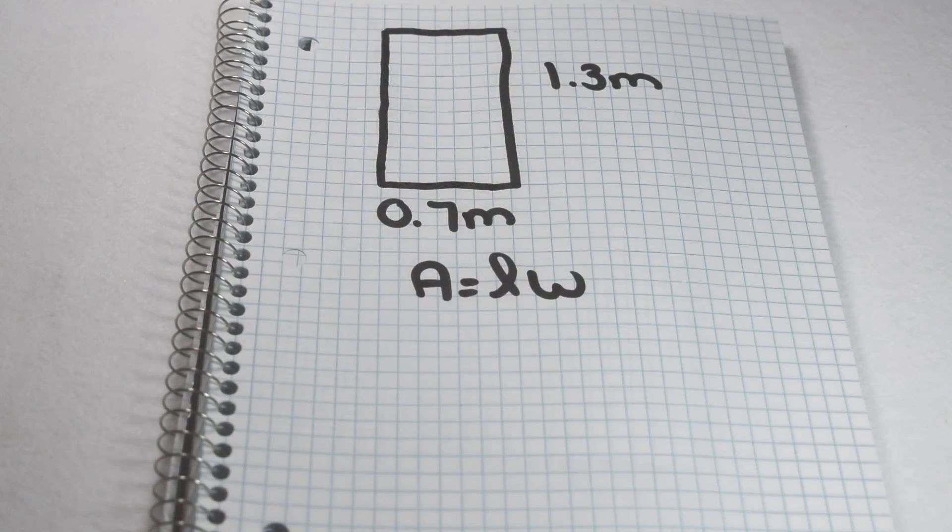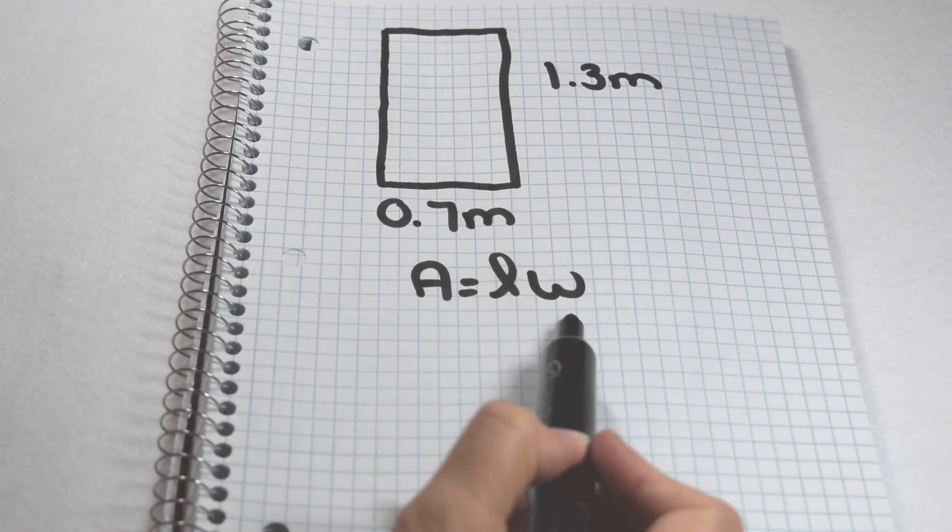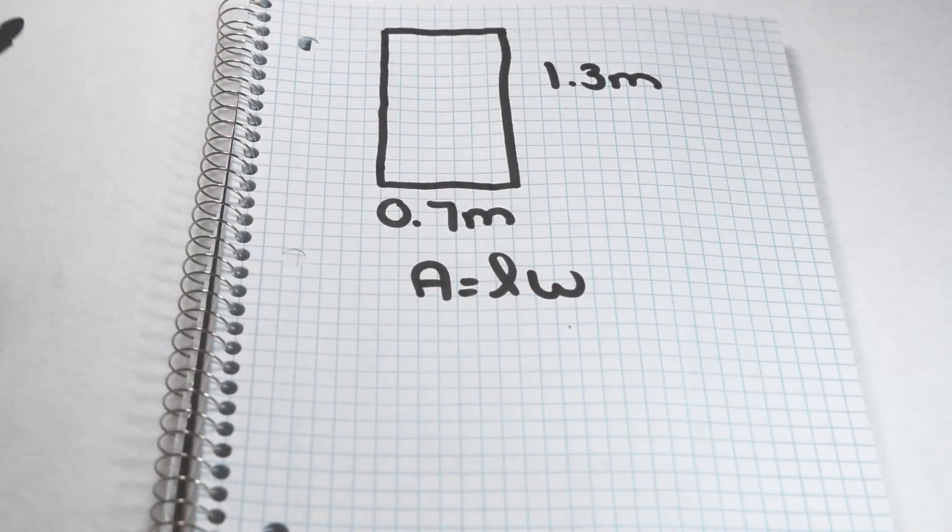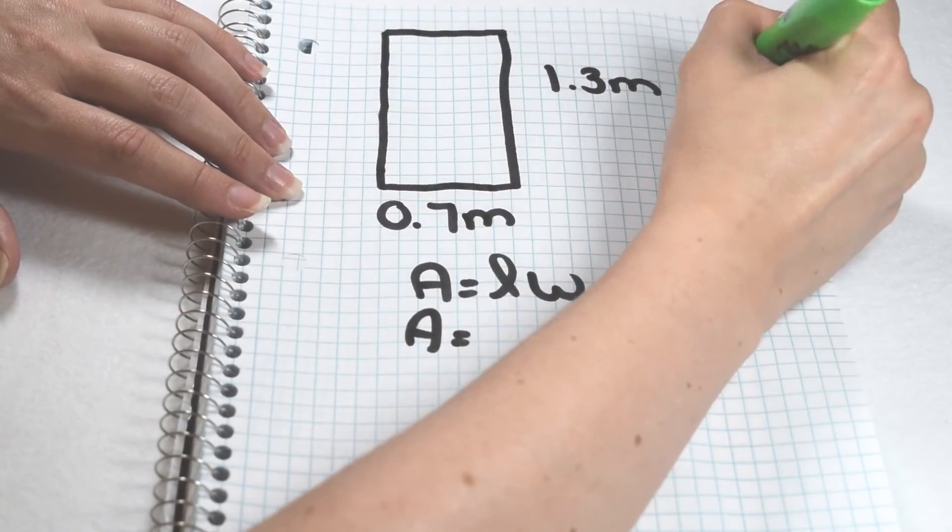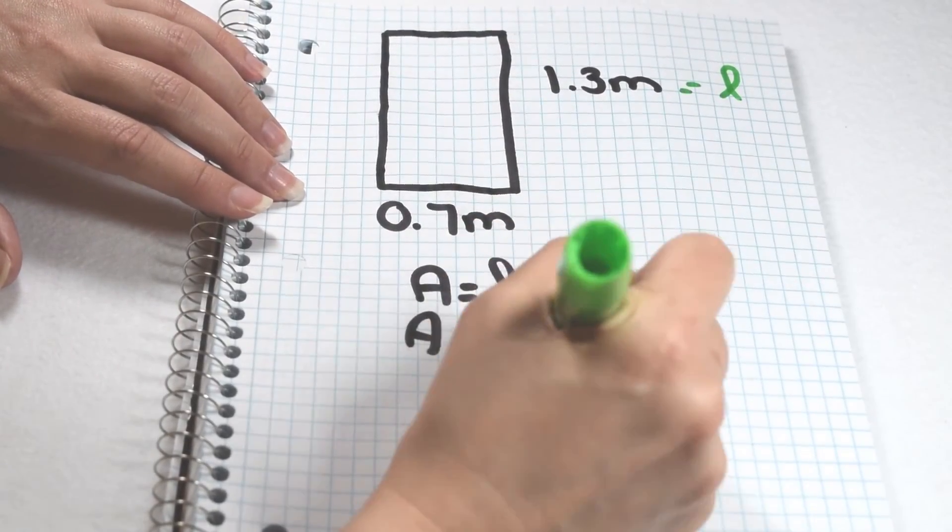When we're finding the area of a rectangle, we know we have to multiply length times width. So I'm going to treat 1 and 3 tenths meters as our length and multiply it by 7 tenths as our width. To multiply now,